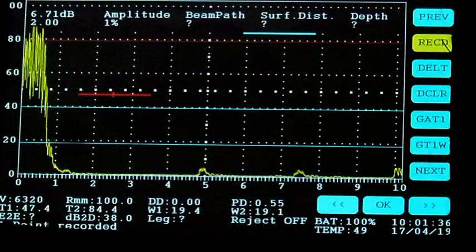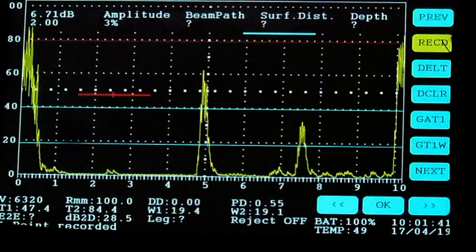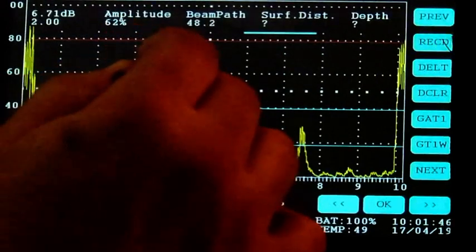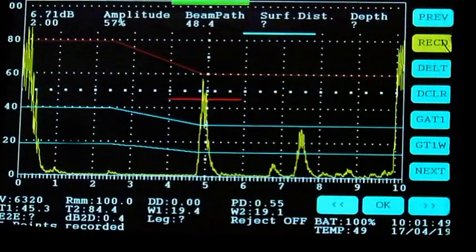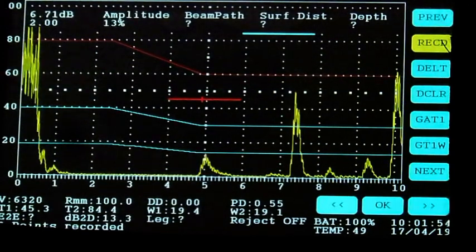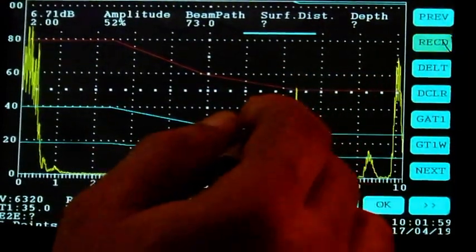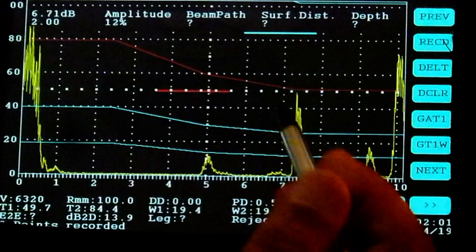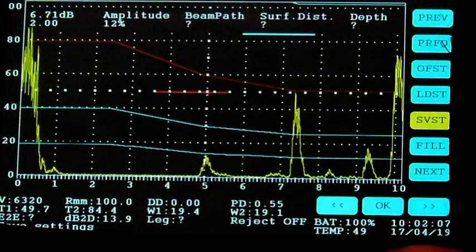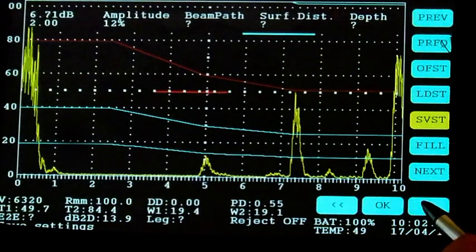Then move over to the second point, pick up an echo, maximize it and gate the signal, and then click record. Move over to the third point, maximize the signal, gate it and then record. So you have a three-point DAC been made. The instrument can actually take up to 14 points for a DAC. Using the same block, we can also construct a TCG.